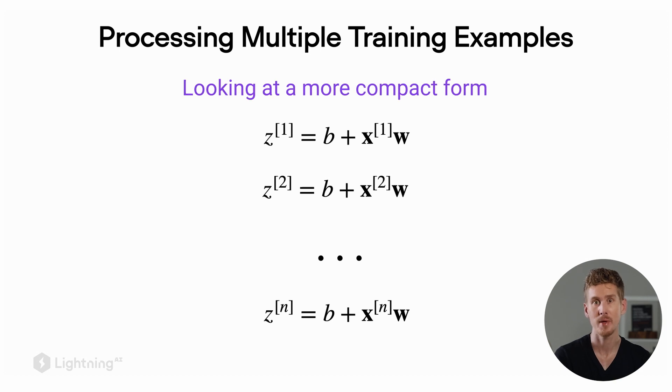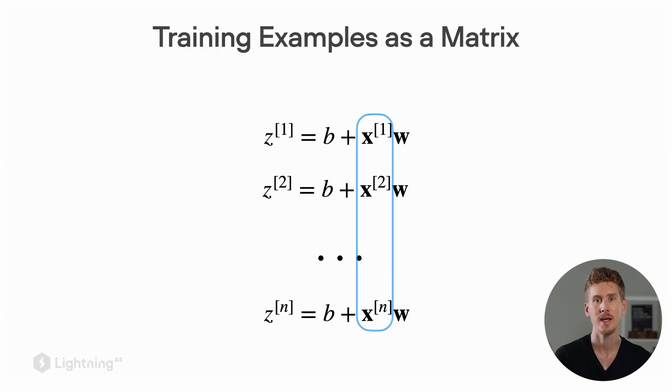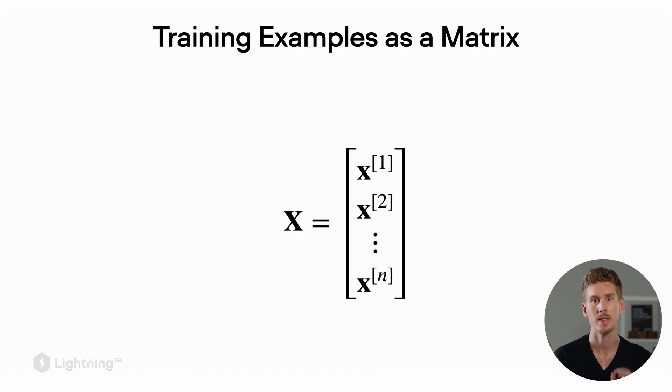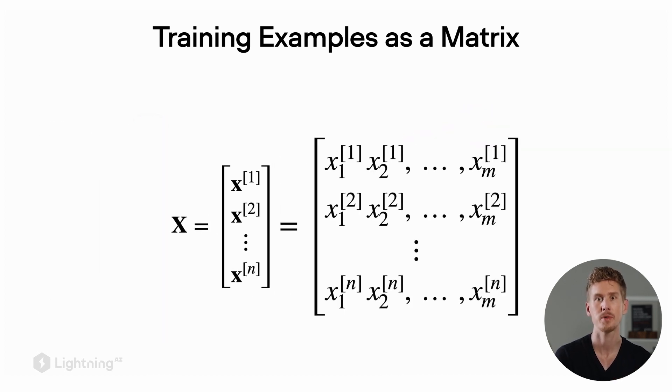Now if we zoom into these x's here, each x represents a vector. This is the feature vector corresponding to each training example. We can actually take these vectors and represent them as a matrix. The matrix X here is the matrix where each row is a single training example. And when we expand it, each column represents one feature. So here in this case, we have an m dimensional data set where we have m different features.